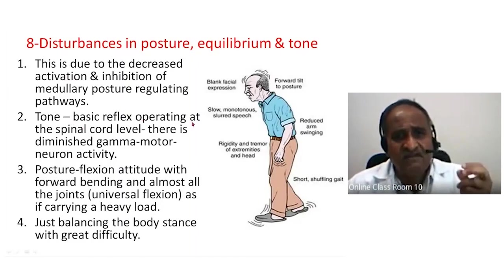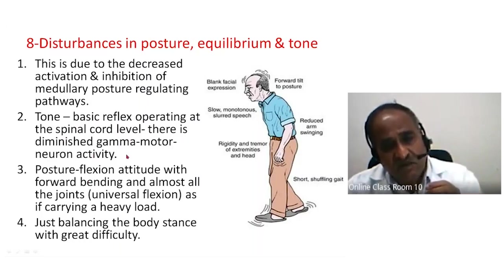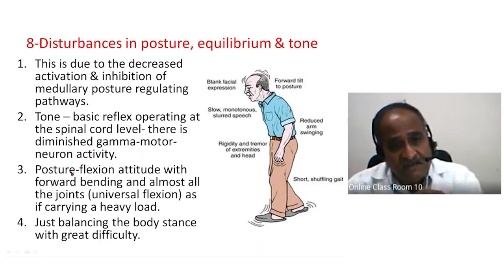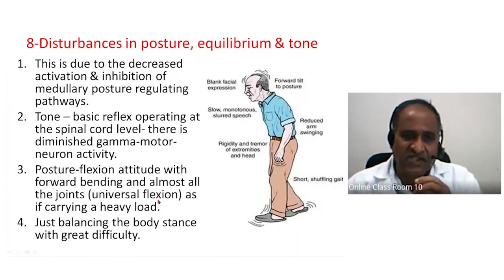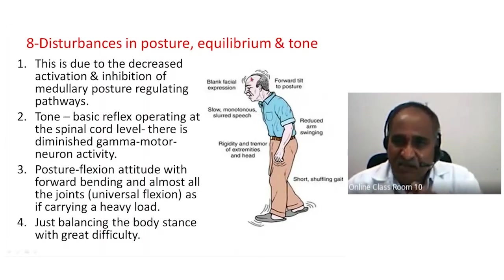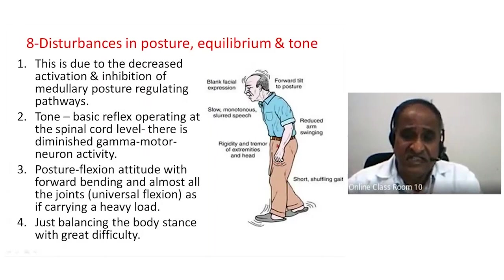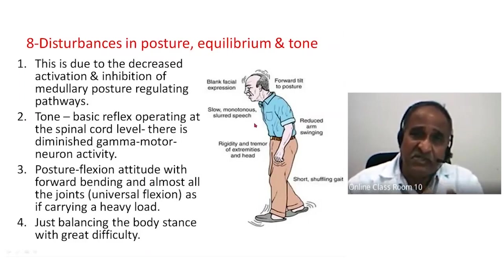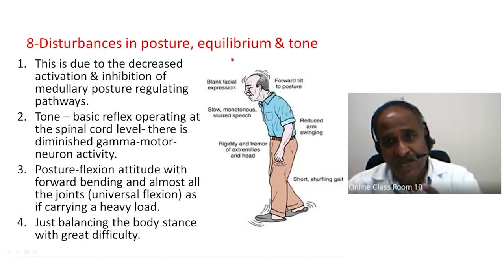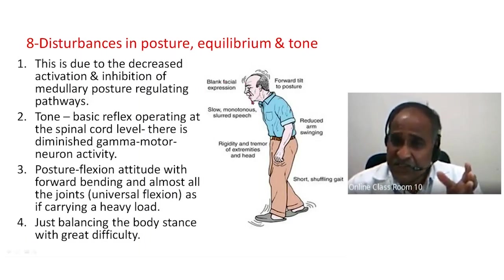The tone of basic reflexes at the spinal cord level shows diminished gamma motor neuron activity. This diminished gamma motor neuron activity of the flexor groups results in a flexion attitude — forward bending with almost all joints in flexion. This universal flexion is as if the person is carrying a load on his back, struggling to balance his stance and keep the center of gravity.